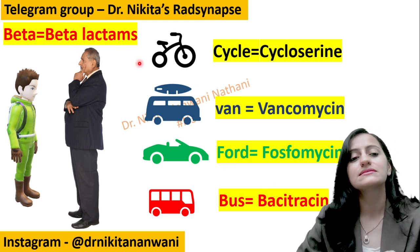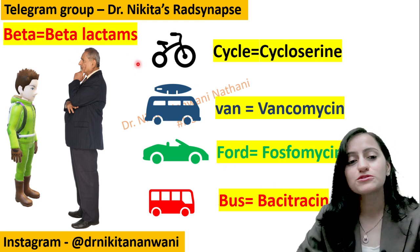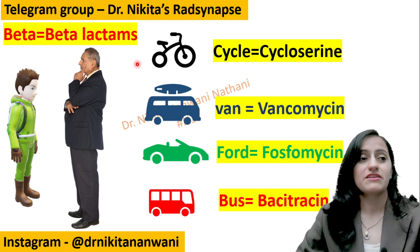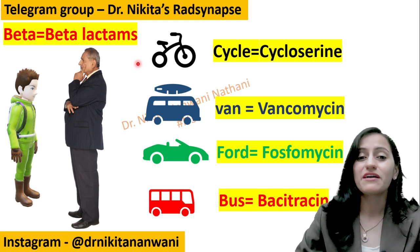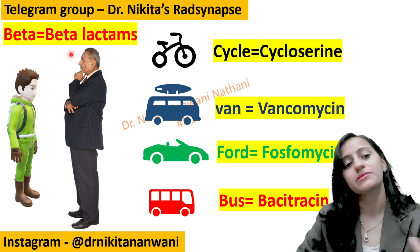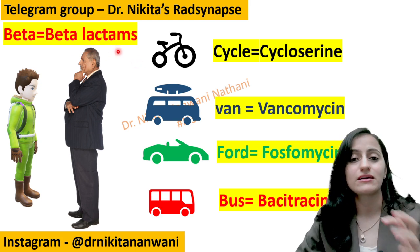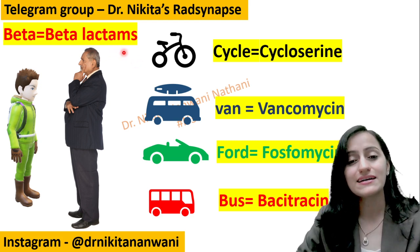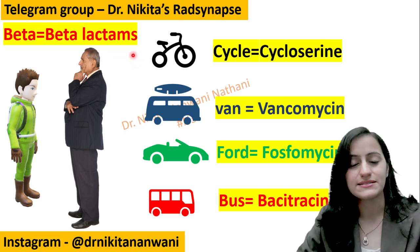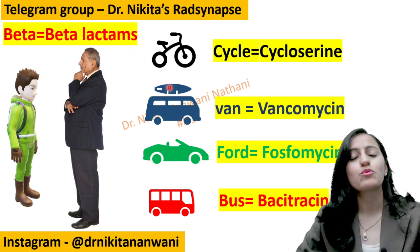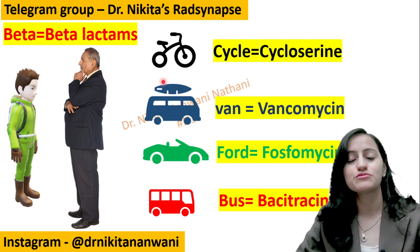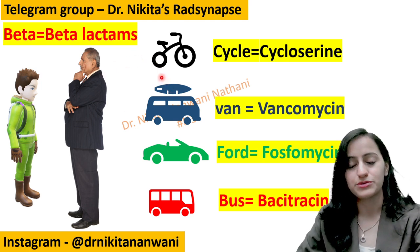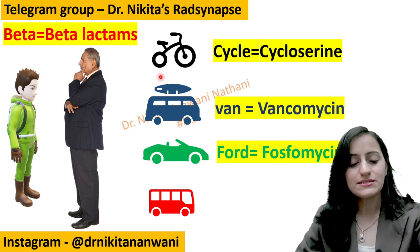Within beta-lactams we have penicillins, cephalosporins, imipenems, carbapenems, and aztreonam. Remember all of that comes under your beta-lactams and related drugs. So these are the cell wall synthesis inhibitors — remember this visual and the story.